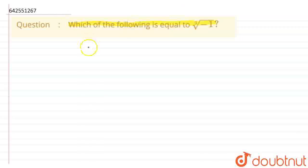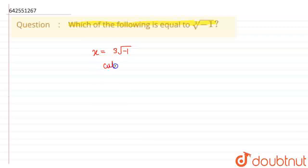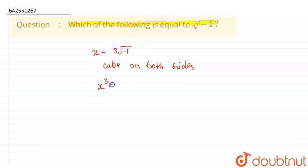So, let me solve this. I can write the given equation as x is equal to cube root of minus 1. Taking cube on both sides, I can write the given equation as x cubed, which is equal to minus 1.